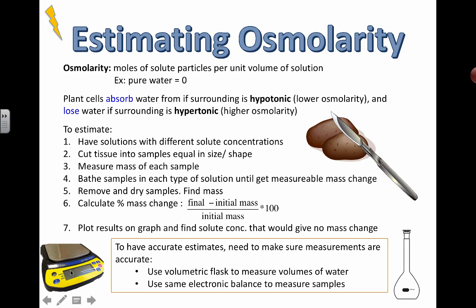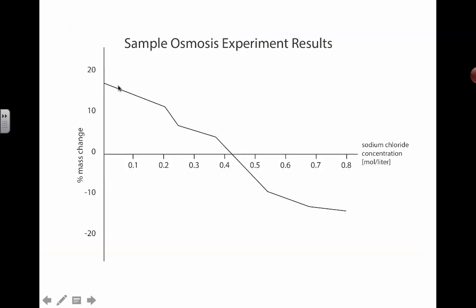Make sure the balances you're using are accurate to a number of decimal places so you can detect even small changes. If you plot everything, you get a graph where the percentage mass change hits zero — that should be your estimated tissue osmolarity of the potato sample. In this case, sodium chloride is used, but it could be a completely different solute or salt.